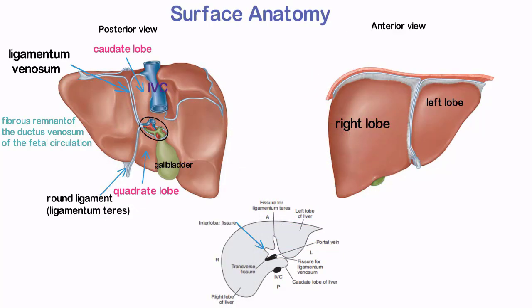The hilum of the liver, the porta hepatis, is located on the inferomedial border of the liver. It is the central location for vessels to enter and exit the liver.